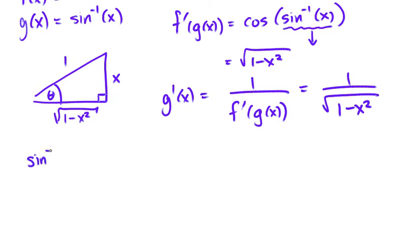And therefore, sine negative 1 of x. The derivative of that is equal to 1 over the square root of 1 minus x squared.